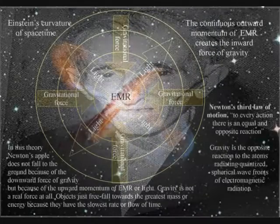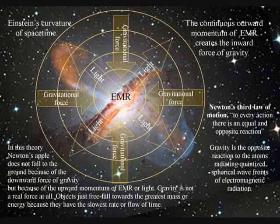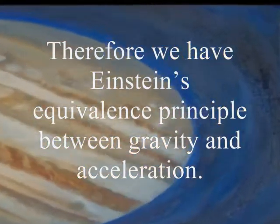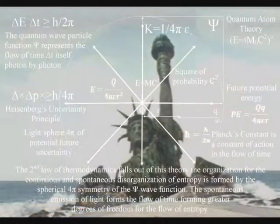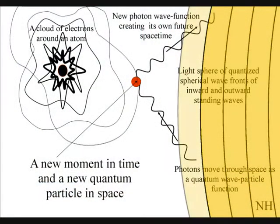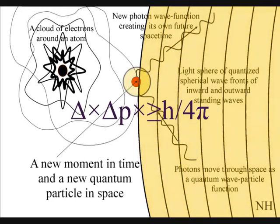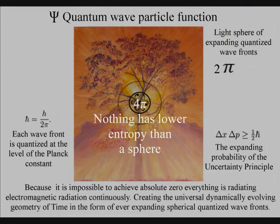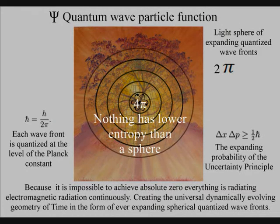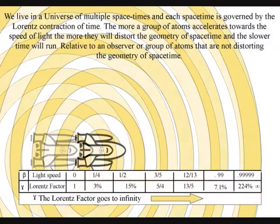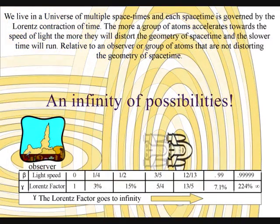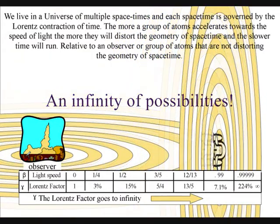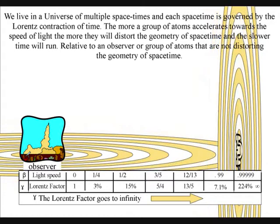In this theory, gravity is a secondary force to the electromagnetic force. Objects just freefall towards the greatest mass or energy because it has the slowest rate that time flows. The second law of thermodynamics falls out of this theory: the organization for the spontaneous disorganization of entropy is formed by the spherical symmetry of the quantum wave-particle function. The spontaneous absorption and emission of light forms the flow of time, with photon energy cascading down forming greater degrees of freedom for the flow of entropy. We have an infinite number of reference frames within our universe, and because light has momentum and momentum is frame dependent, each object or observer will have their own reference frame with their own future uncertainty as time unfolds photon by photon.